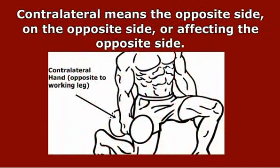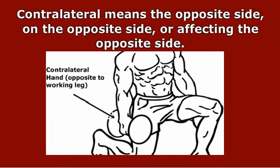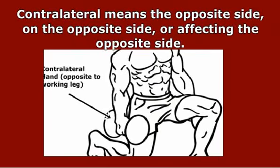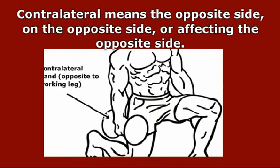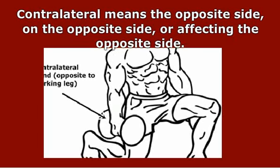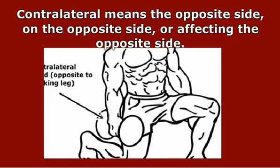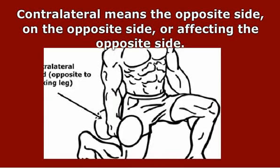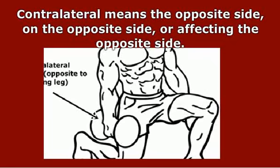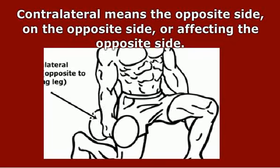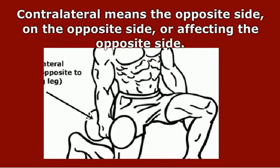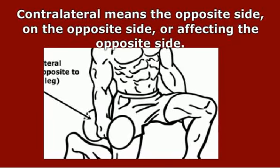Definition of contralateral. Contralateral means the opposite side, or affecting the opposite side. The side of the brain that controls the right hand is contralateral to that hand, meaning it is on the opposite side from the hand. The external obliques cause contralateral rotation of the torso, meaning they cause the torso to rotate to the opposite side from the muscle that is contracting. Another word for contralateral is heterolateral. In resistance and strength training, we often speak of contralateral strength differences when referring to one side of the body being weaker than the other.